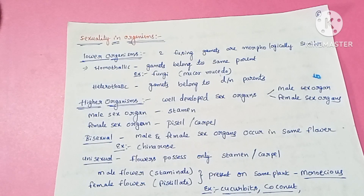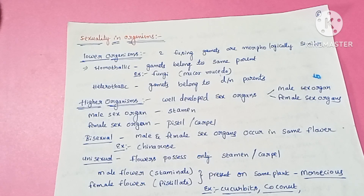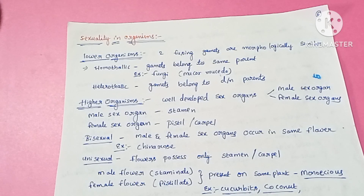Hello everyone, this is Lata Akula. In the last video we were studying about sexual reproduction. In sexual reproduction there are three stages: pre-fertilization, fertilization, and post-fertilization events. In the first event, that is the pre-fertilization event, we are studying about gametogenesis. In gametogenesis there is another concept: sexuality in organisms.